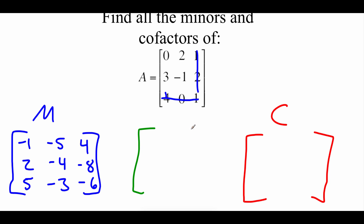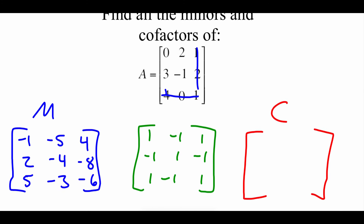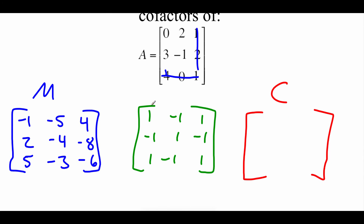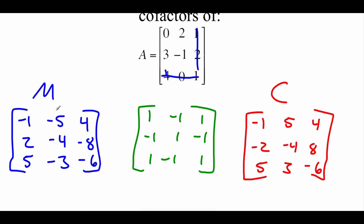Now applying the cofactor sign chart for a 3x3 matrix — where positive ones keep the sign and negative ones change it: negative 1 stays the same; negative 5 changes to positive 5; 4 stays the same; 2 changes to negative 2; negative 4 stays the same; negative 8 changes to positive 8; 5 stays the same; negative 3 changes to positive 3; and negative 6 stays the same. So there's our minor matrix and our cofactor matrix based on the original matrix.